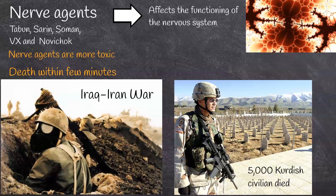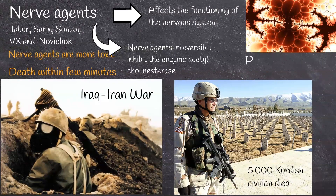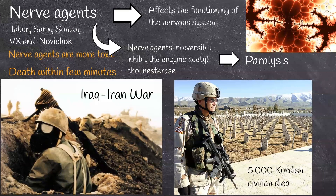Nerve agents irreversibly inhibit the enzyme acetylcholinesterase. Inhibition of acetylcholinesterase causes accumulation of acetylcholine, leading to overexcitation or paralysis. As soon as nerve agents enter the system, symptoms of poisoning appear.